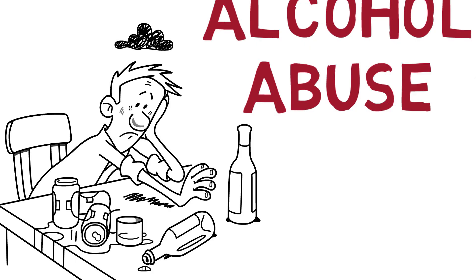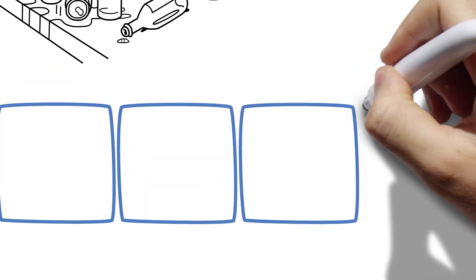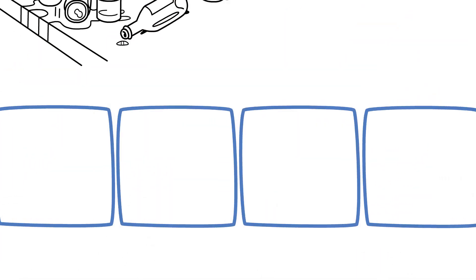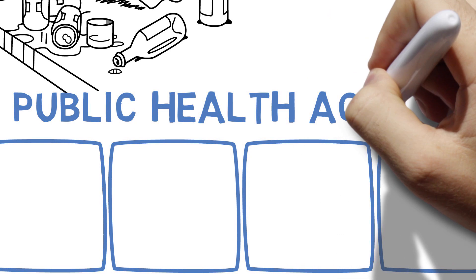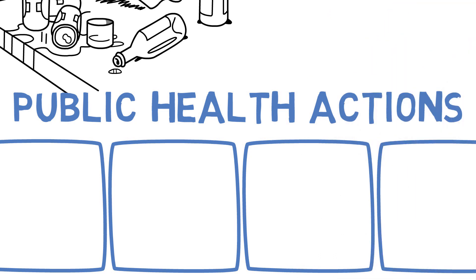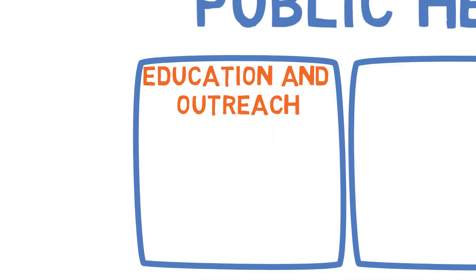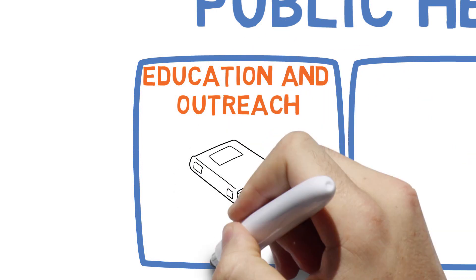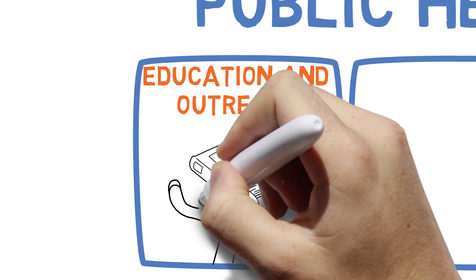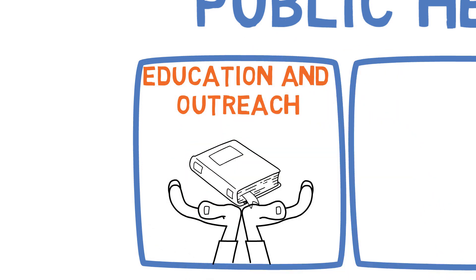To address alcohol misuse and to reduce its impact on health, there are several public health actions we can take. The first is education and outreach. Public health authorities can provide information to the public about the risks of alcohol abuse and the importance of responsible drinking.